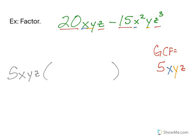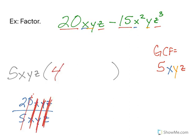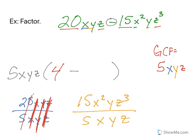And then I do the same thing. So 20xyz divided by 5xyz. Well, 20 divided by 5 gives me 4. The x's cancel out. The y's cancel out. The z's cancel out. My minus sign comes down. And then I take 15x squared yz cubed divided by 5xyz.